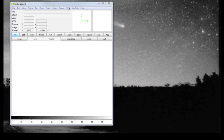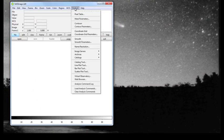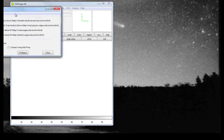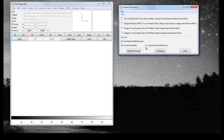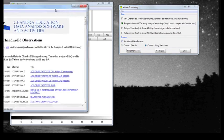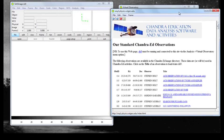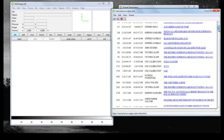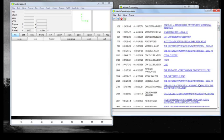Alright, so we open DS9. We go to Analysis. Go down to the Virtual Observatory. And remember to connect using the Web Proxy. Click on the Rutgers Primary MOOC. Here we have a list of all the observations that we can access.